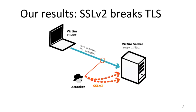We have a victim client that connects to a server using a modern TLS connection. We assume the victim client doesn't even support SSLv2. But in DROWN, the attacker observes the TLS connection, then later sends malicious SSLv2 handshakes to the server, and manages to squeeze out little bits of information from the server, then combines these bits of information to decrypt the TLS connection. DROWN is about breaking TLS using SSLv2 as a tool.